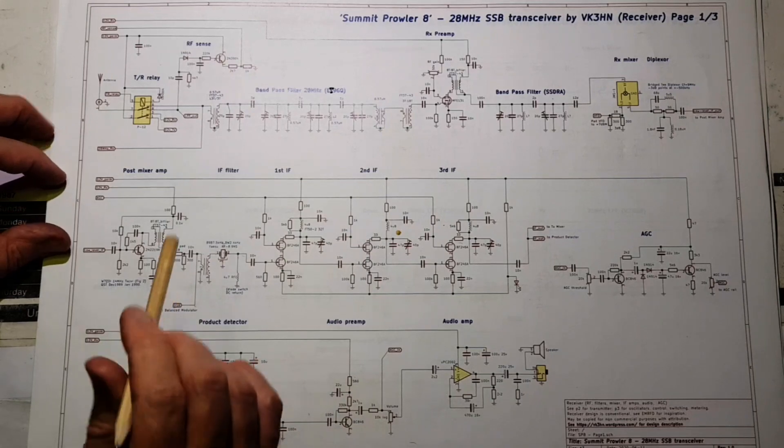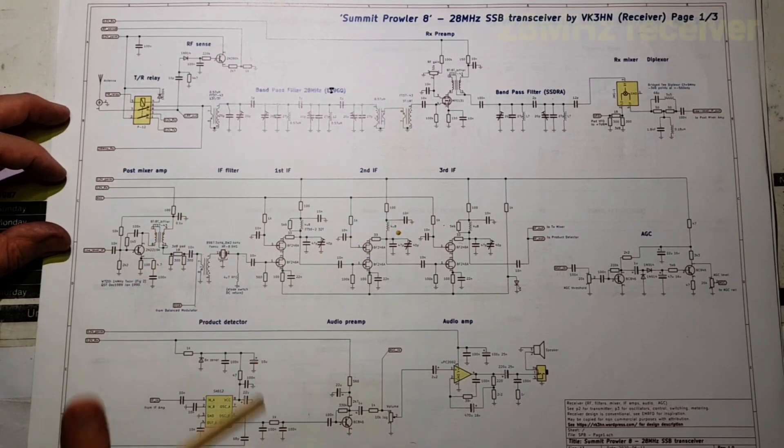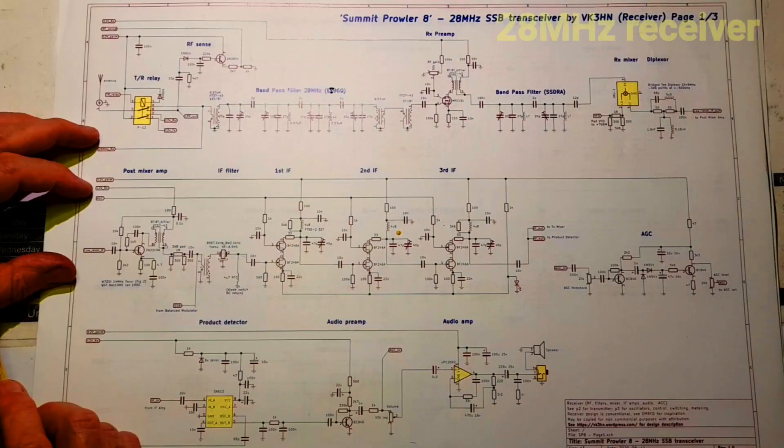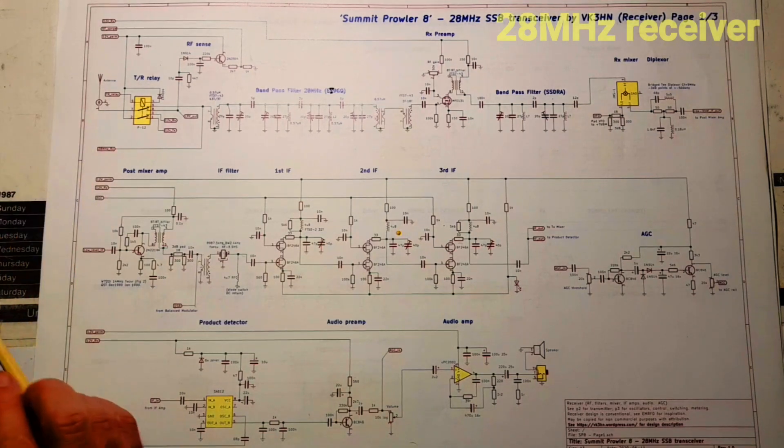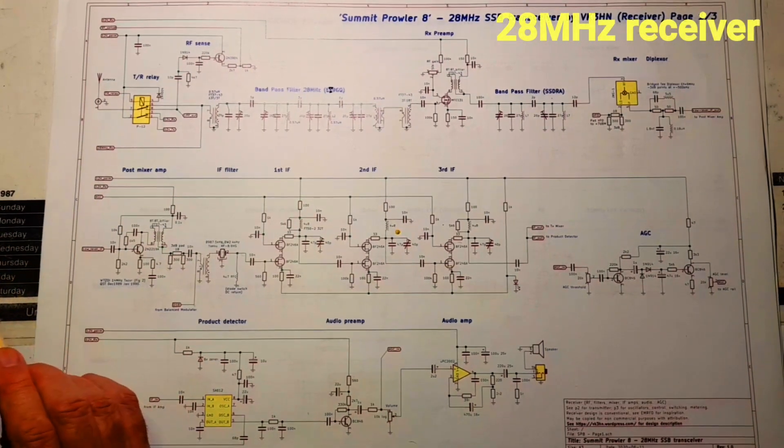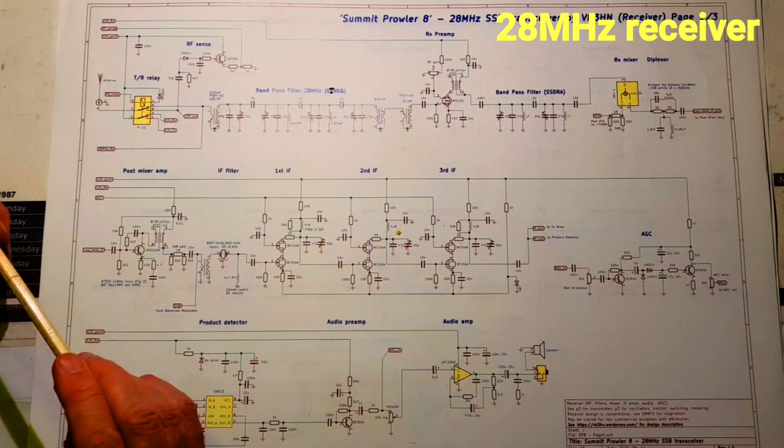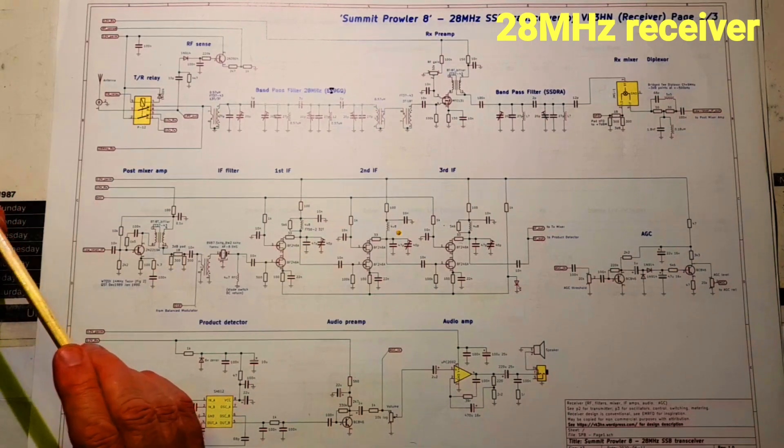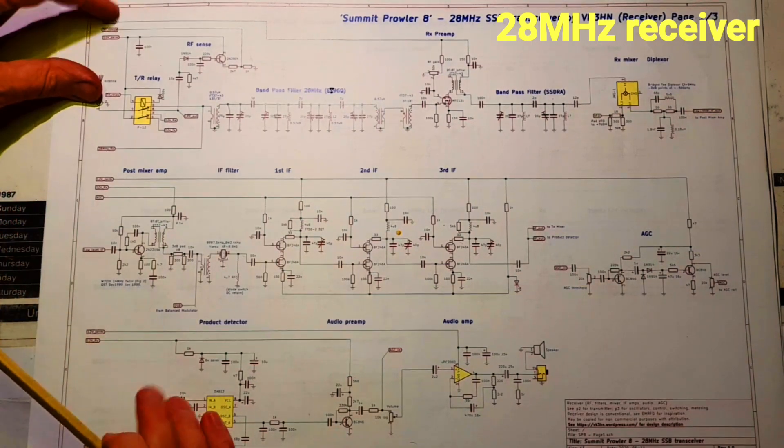Let's do a quick walk through of the schematics for the complete transceiver. We can park the 2m part of this transceiver because that's provided by the external transverter. Most of the work here was in building a 28MHz SSB transceiver as the IF.